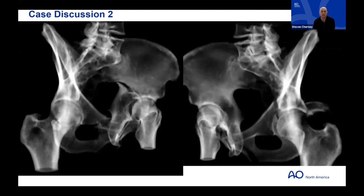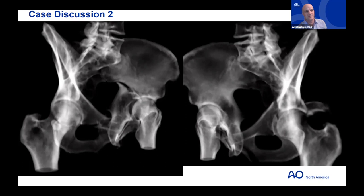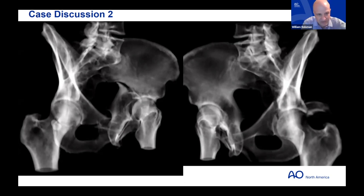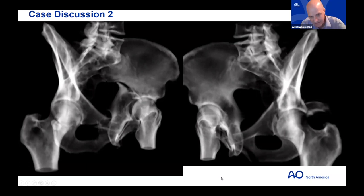Looking at the available oblique views for this case: the ilioischial line is disrupted, the iliopectineal line is disrupted, and there appears to be a gull sign indicating a posterior wall component. This looks like a transverse posterior wall. The ischial ramus isn't clearly visible on the obturator oblique in this instance.